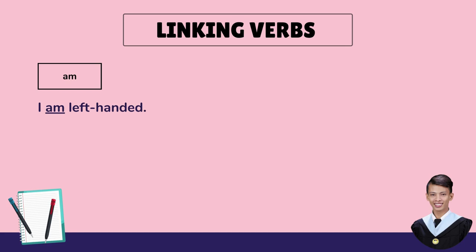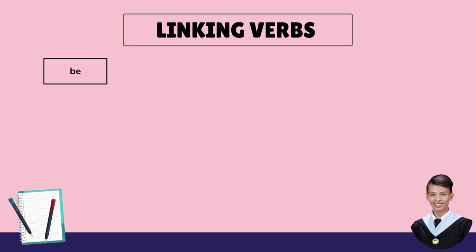Linking verbs also include the verb be. This verb has eight different forms, and these are: am, be, is, are, was, were, being, and been.